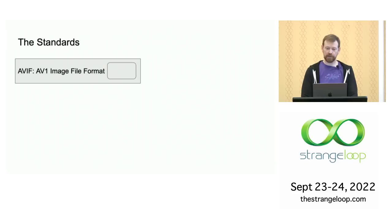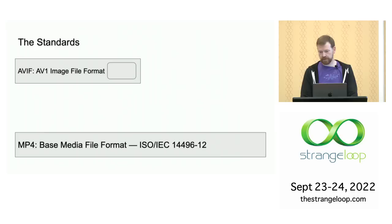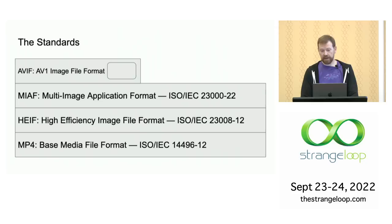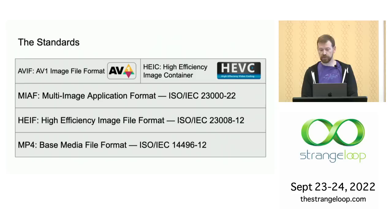MP4 is a general purpose container format for media. It defines a flexible system based on nestable boxes. Formats which use the MP4 container define the boxes specific to their needs. This brings us to the high-efficiency image format, or HEIF, which defines the boxes necessary for images, and the multi-image application format, or MIAF, which defines additional constraints to ensure interoperability. Both the AVIF and HEIF containers are based on these standards. The main difference is that AVIF uses the AV1 codec, while HEIF uses a codec called HEVC.